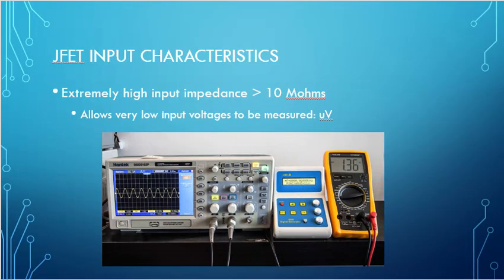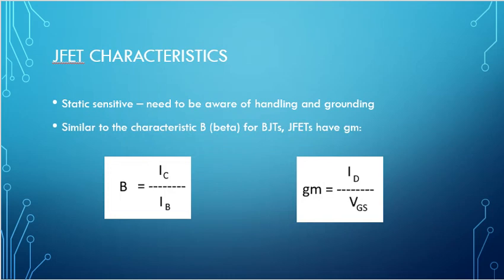JFET input characteristics. This is one of their really strong points: they're extremely high input impedance, greater than 10 megaohms. It allows very low input voltages to be measured in the microvolt and picovolt range. You'll find they'll use some sort of JFET or FET as the input on oscilloscopes and voltmeters and capacitors measurements, test gear, when you want to measure extremely low signals.